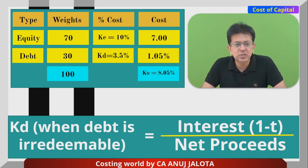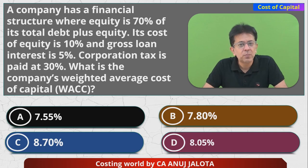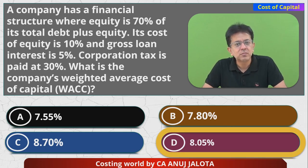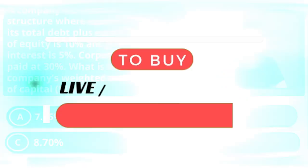Totaling it out gives Ko = 8.05%. So the answer is option D — 8.05%. Thank you, I'll see you all next time. Bye.